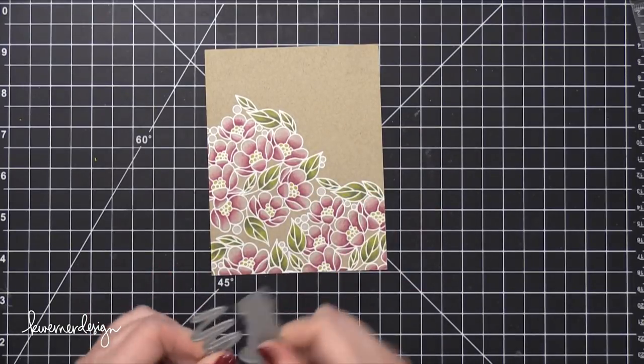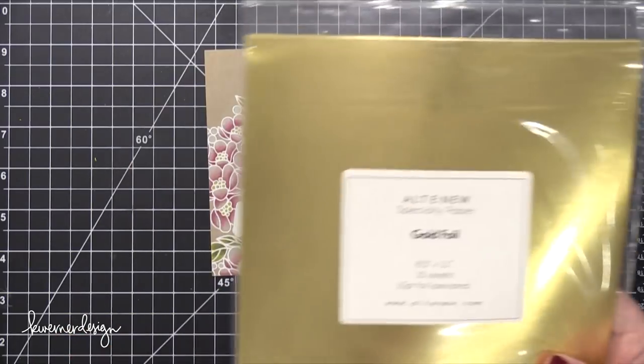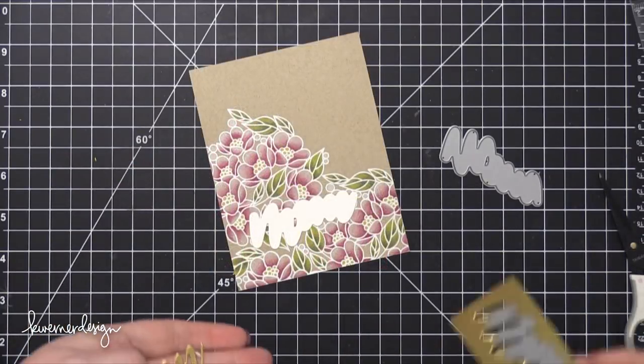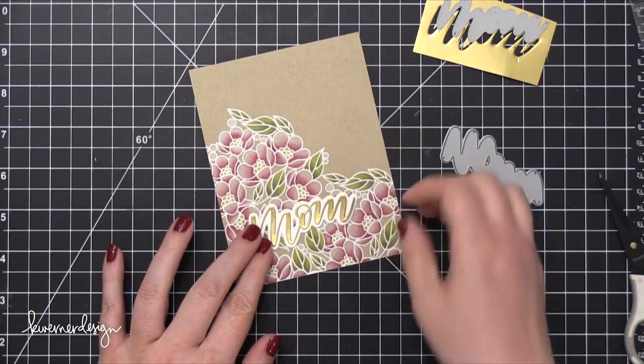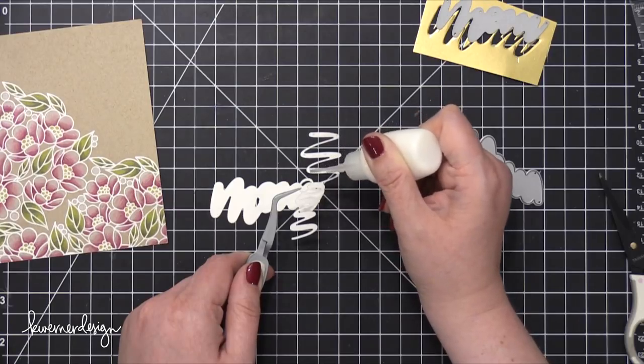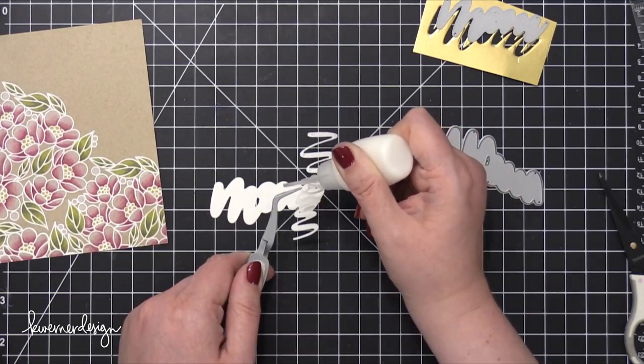Now I'm using the Script Mom die. I think that's what it's called. It has the regular mom word, which I'm going to cut out of some gold foil card stock from Altenew. And then it has a shadow die. And I've cut that out of some Neenah Classic Crest Solar White card stock. And I'm going to adhere these two together and it'll create a nice big greeting area to go on the front of my card.